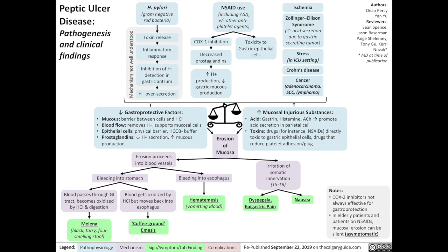The second main cause of peptic ulcer disease, NSAIDs, includes the use of aspirin (ASA) as well as other antiplatelet agents. NSAIDs cause the inhibition of an enzyme called COX-1, which in turn increases the production of hydrogen ions as well as reduces the production of gastric mucus. In addition, NSAIDs themselves are directly toxic to gastric epithelial cells.